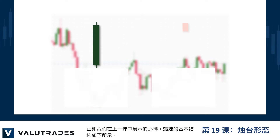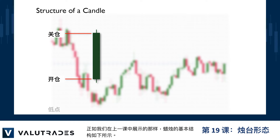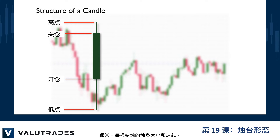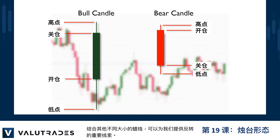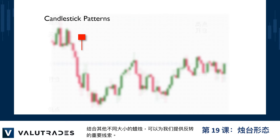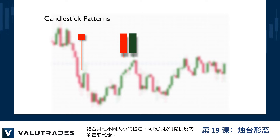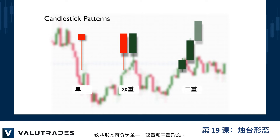The basic anatomy of a candle looks like this as we displayed in a previous lesson. Often the size of the body and the wick of each candle, combined with other candles of different sizes, can give us vital clues to reversals. These are categorized as single, dual, and triple patterns.